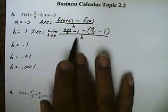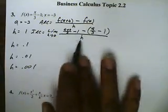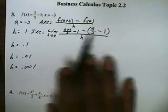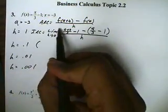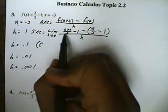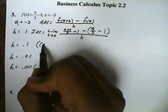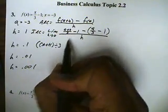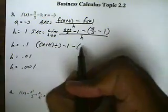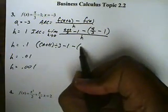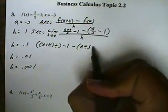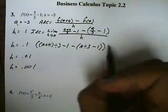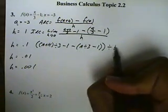We want to put all this into the calculator, where a is negative 3 and h is 1. We're going to put an open parenthesis for the numerator, then an open parenthesis for a plus h — that'll be alpha A plus alpha H — close parenthesis, division 3, then subtract 1. Then subtract, open parenthesis, alpha A, division 3, subtract 1, close parenthesis, and close the entire numerator, then divide all by alpha H.